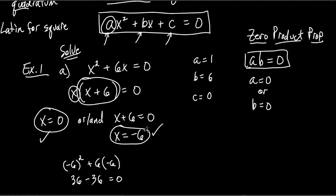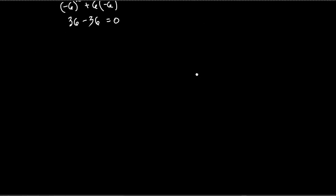So those are my two answers: x equals zero and x equals negative six. You thought it was bad just getting one answer for x — now we're getting two answers for x. You're eventually going to get three, but right now we're just getting two. Let's do a couple more and we'll kind of get in the swing of things.